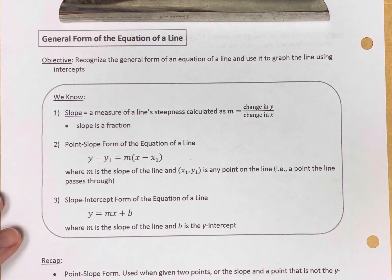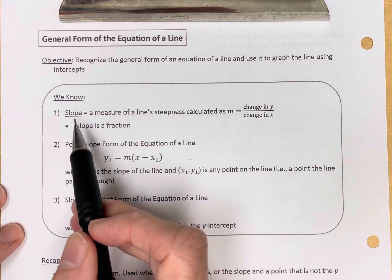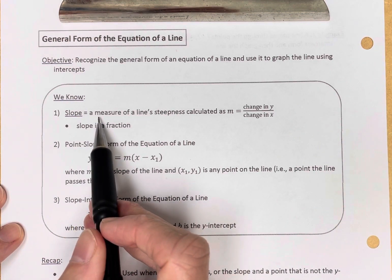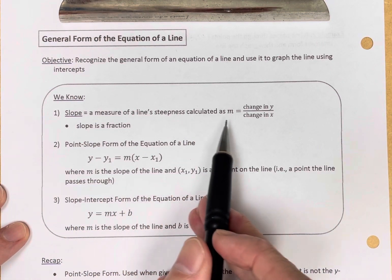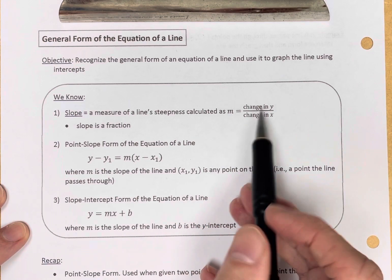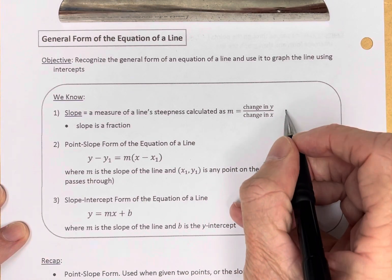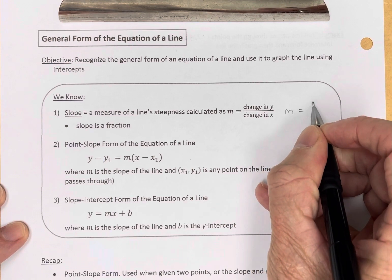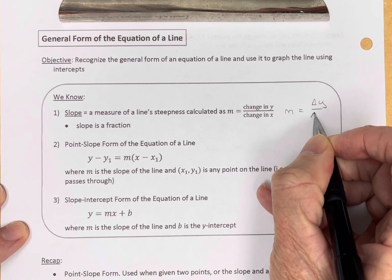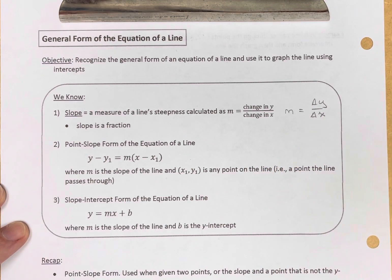So what do we know coming in that's going to be helpful? We know what the slope is. Slope is a measure of a line's steepness calculated as m equals the change in y over the change in x. In shorthand, slope equals change in y over change in x.